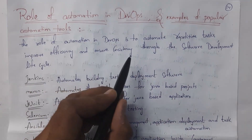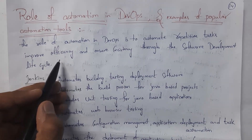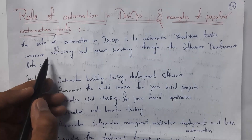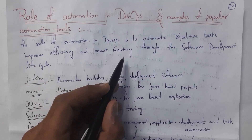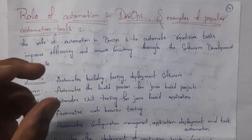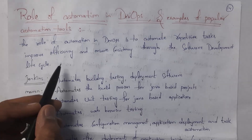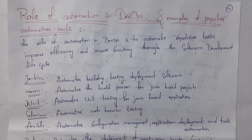By using automation we achieve efficiency and consistency. Efficiency means the complete work is done by various automation tools, so we complete work in a very short time. Consistency means correctness — since the complete work is done by automation tools, there is less chance for errors, so the work will be correct. By using various automation tools we achieve both efficiency and consistency.